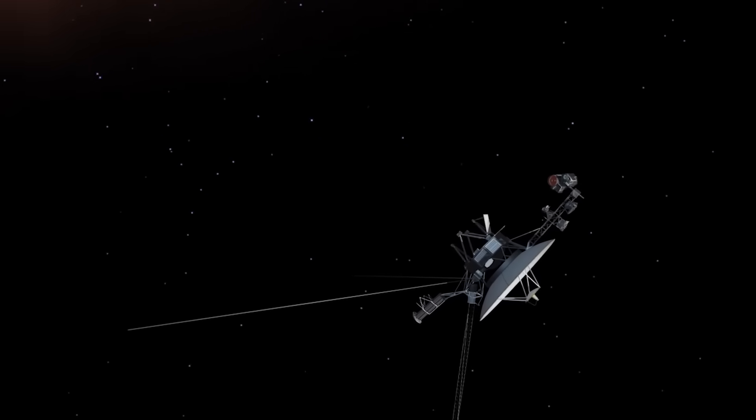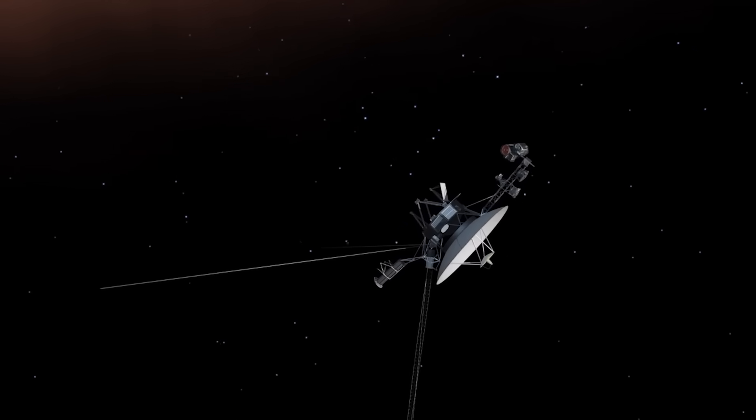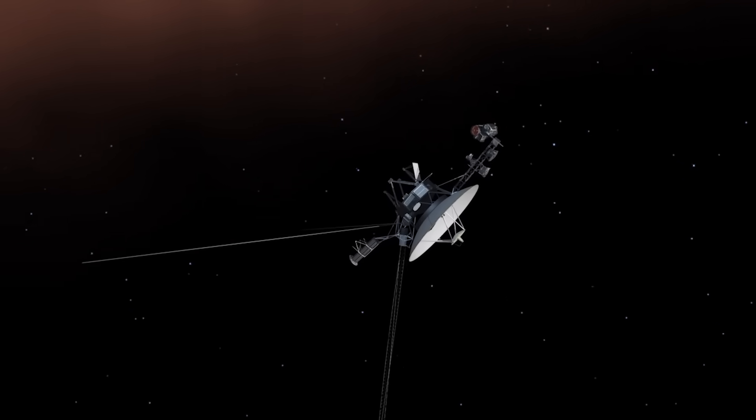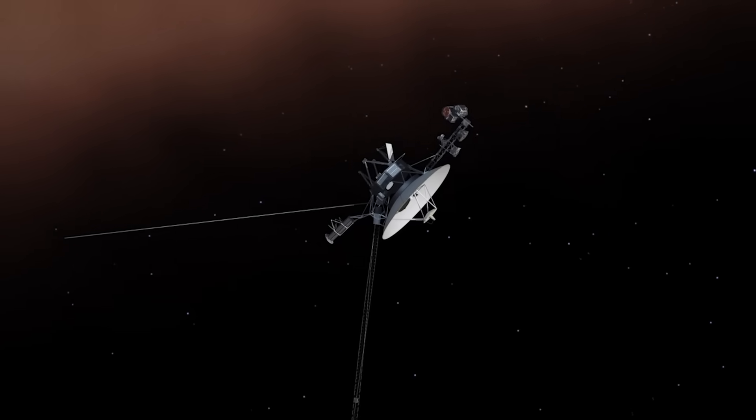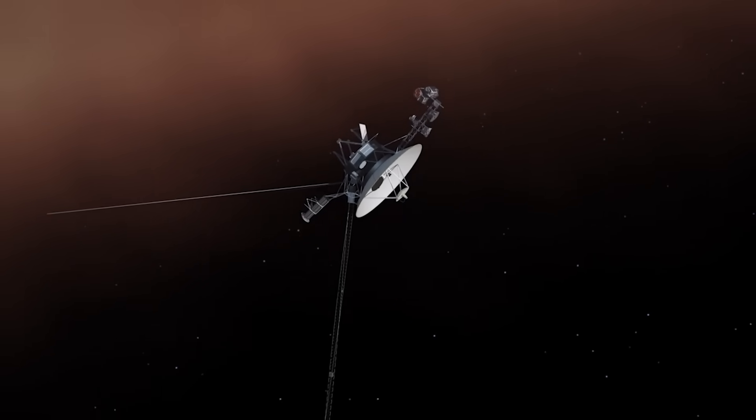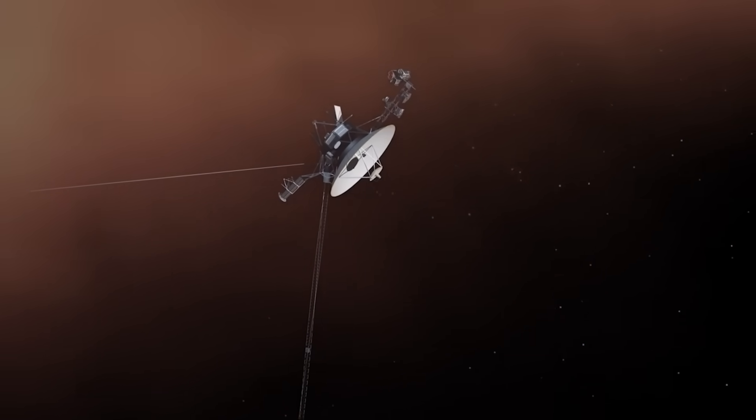And that raises one final terrifying possibility. What if the outer solar system is being monitored? Not by a physical entity, but by a field. A system that records when civilizations grow powerful enough to leave their star's domain, and then decides what happens next.